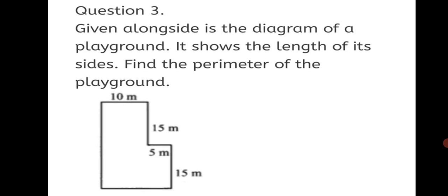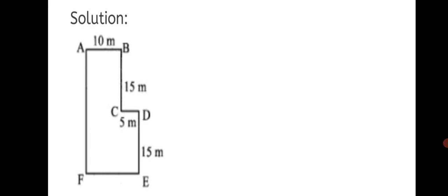Question 3: Given alongside is the diagram of a playground showing the lengths of its sides. Find the perimeter of the playground. The sides shown are 10 meters, 15 meters, 5 meters, and 15 meters. We will find the remaining sides from the diagram.